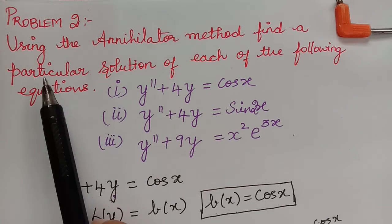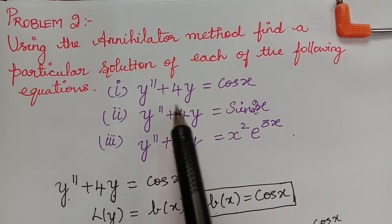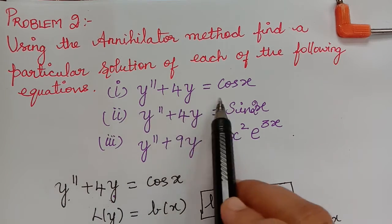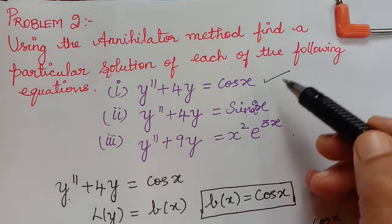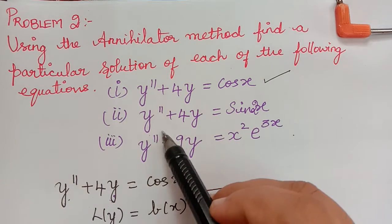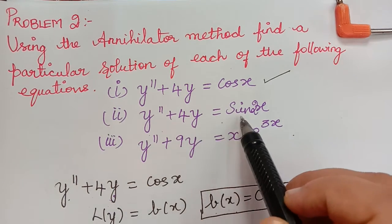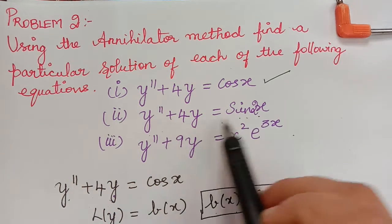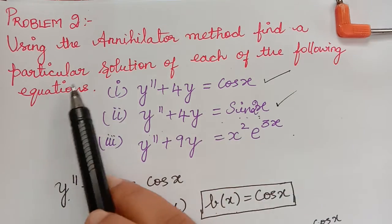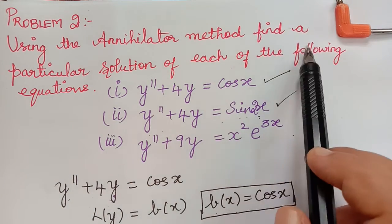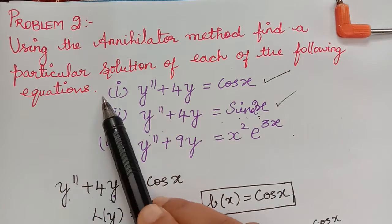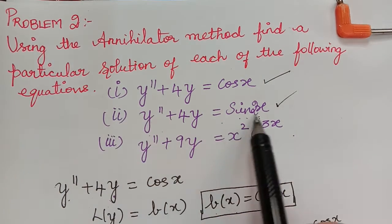Hello students. In our previous video we solved the first subdivision, y'' + 4y = cos x. Now in this video let us solve the second subdivision: y'' + 4y = sin 2x. This problem has appeared in one of the question papers from previous years. Using the annihilator method, find a particular solution of each of the following equations.